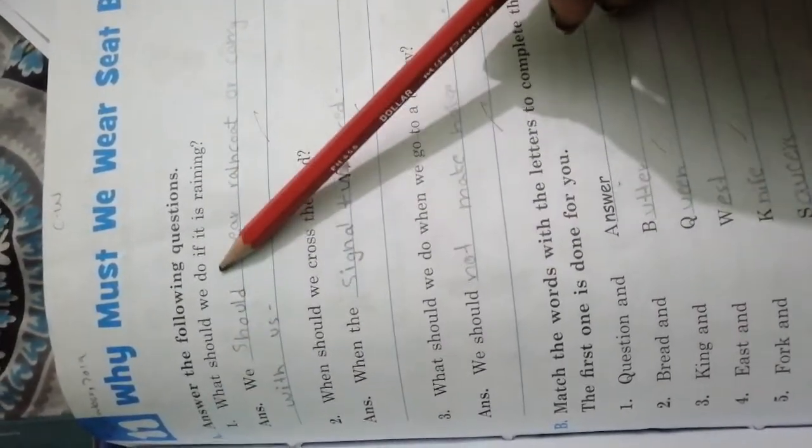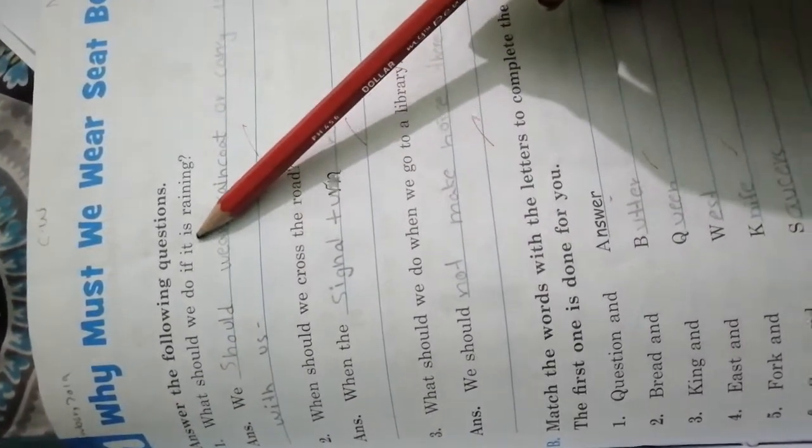Why must we wear seatbelts? Answer the following question: What should we do if it is raining? We should wear a raincoat or carry an umbrella with us. Raincoat wear and umbrella carry.